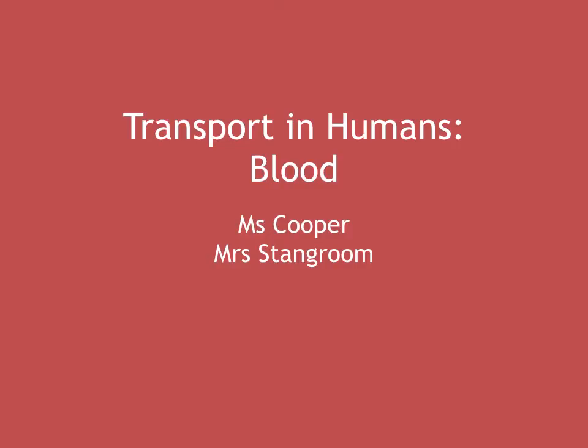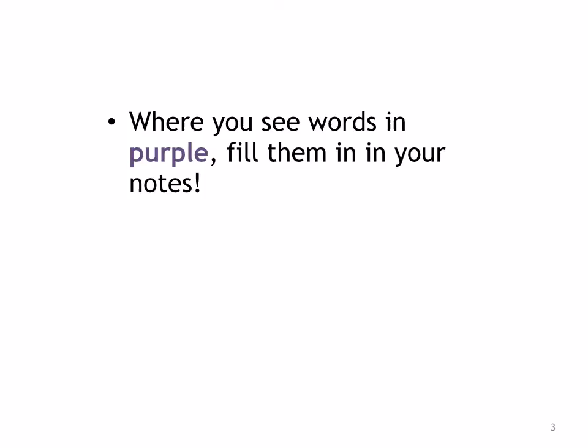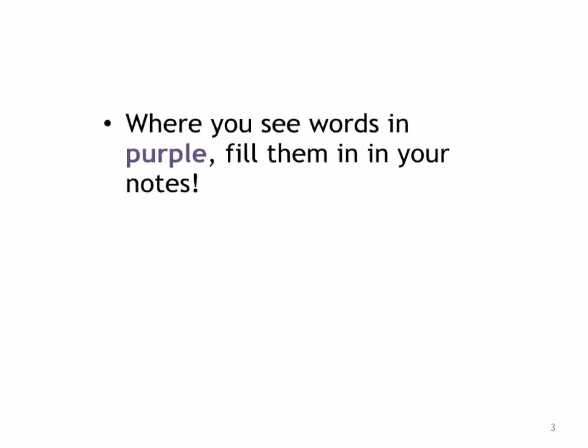In this topic, we're going to discuss transport in humans, focusing on blood. We'll look at what are the functions of blood and what are the different components of blood. So you've got plasma, red blood cells, the adaptations of red blood cells to carry oxygen, white blood cells — including phagocytes and lymphocytes — and there's also a process called phagocytosis. And platelets, which are involved in blood clotting. Where you see words in purple in this video, fill them in in your notes.